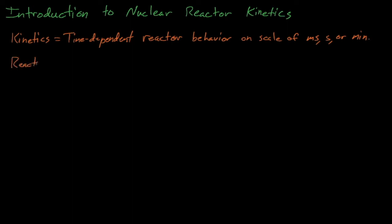This system's reactivity, rho, describes how far a reactor is above or below being critical, and rho equals k effective minus 1 divided by k effective. We'll circle back and talk about reactivity more in a few minutes.